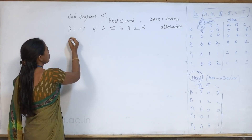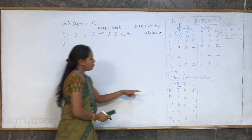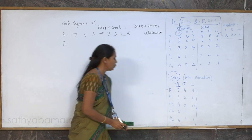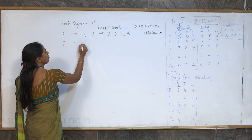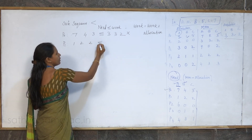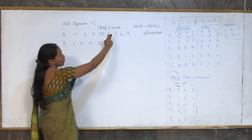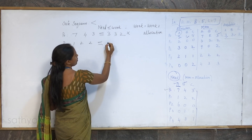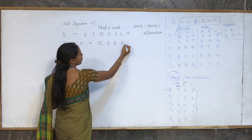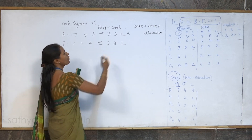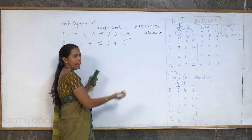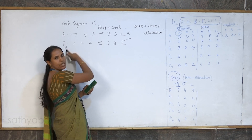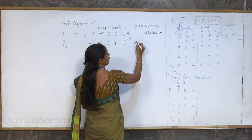We try process P1. The process P1 need is 1, 2, 2. It should be less than or equal to available. At present, available is 3, 3, 2. The condition is true, so we are granting this request. After the process completion, process P1 will deallocate all its resources and they will be added back to available.